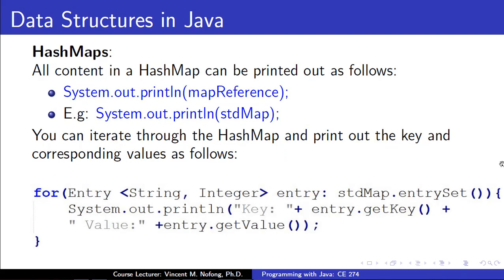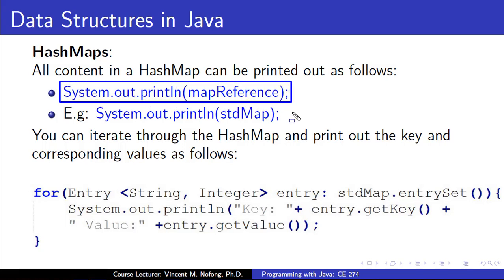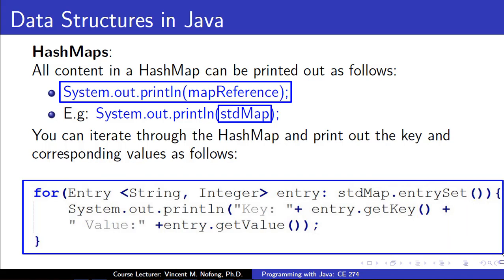Now that we have our HashMap and have been able to insert content into it, how do we print this content out to the console or access it for a specific use? We can simply use System.out.println and it will print the content out. For example, using System.out.println(studentMap) will print all the content in the studentMap — the key and its corresponding value. You can likewise iterate through the HashMap to print out the key and corresponding value, or to access them for whatever purpose. In our practicals we will look at how we can do that.